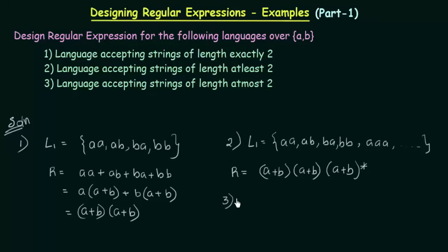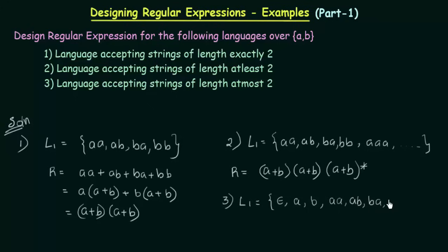Now let's come to the third one — a language accepting strings of length at most 2. At most 2 means the maximum length is 2 and the minimum is not specified, so we can have epsilon (the empty string), strings of length 1 like A and B, and strings of length 2: AA, AB, BA, and BB. These are the only strings accepted because the maximum is 2, and we cannot have 3 or more.